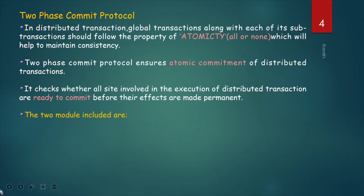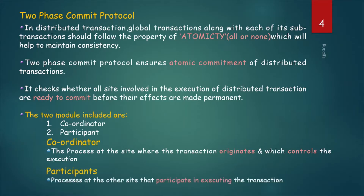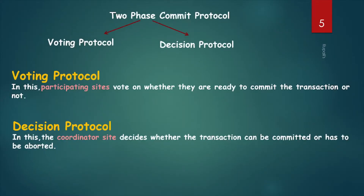There are two modules: one is coordinator and the second is participant. The coordinator is the process at the site where the transaction originates and which controls the execution — the originating site is the coordinator site. Participants are processes at the other sites that participate in executing the transaction. As the name suggests, Two-Phase Commit Protocol has two phases: first is the voting protocol and second is the decision protocol.